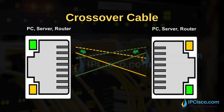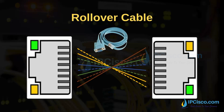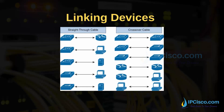If you connect similar devices, their pins are in the same order, so to connect TX and RX you need to crossover the connection — this is why we use a crossover cable. Another type is the rollover cable, used to connect a computer terminal to a router's console port; the pins at one end are the opposite of the other end. Use a straight-through cable when connecting a switch to a router or a switch to a PC. Use a crossover cable when connecting a switch to another switch, a router to another router, or a PC to a router.